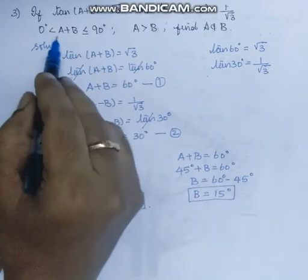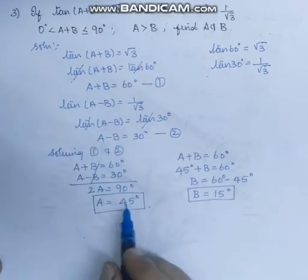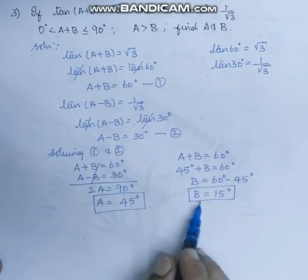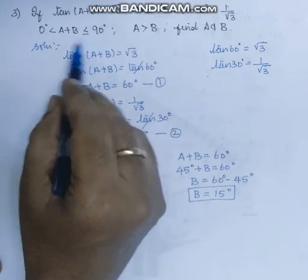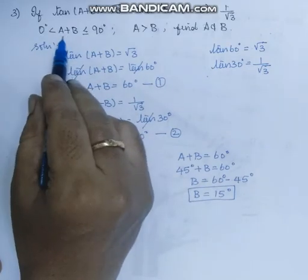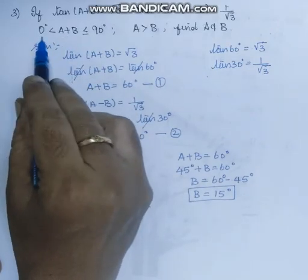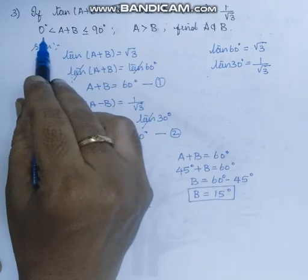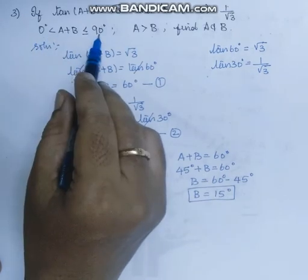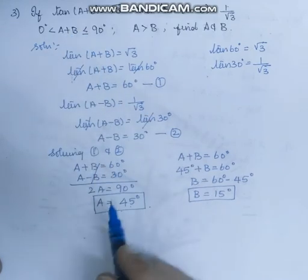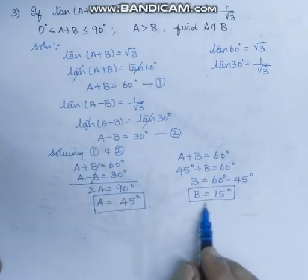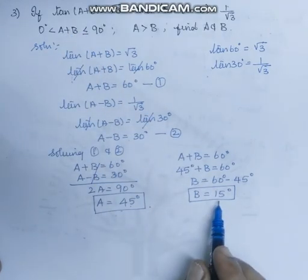Also, a plus b equals 45 plus 15 equals 60 degree, which is greater than 0 and less than 90 degree, satisfying the given condition. So a is equal to 45 degree and b is equal to 15 degree. Thank you.